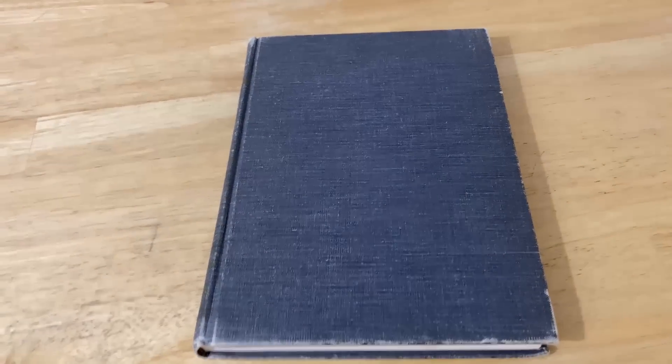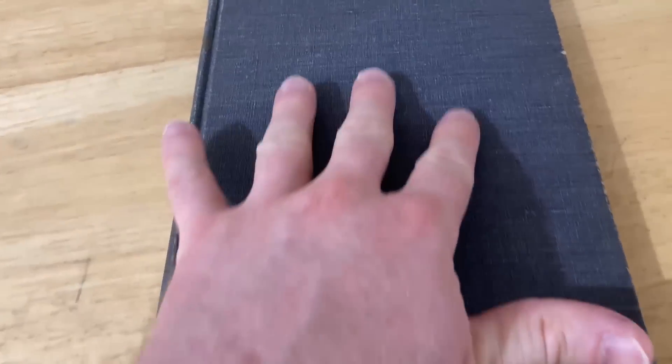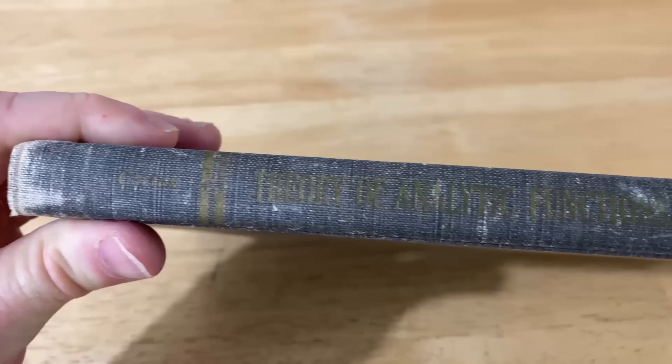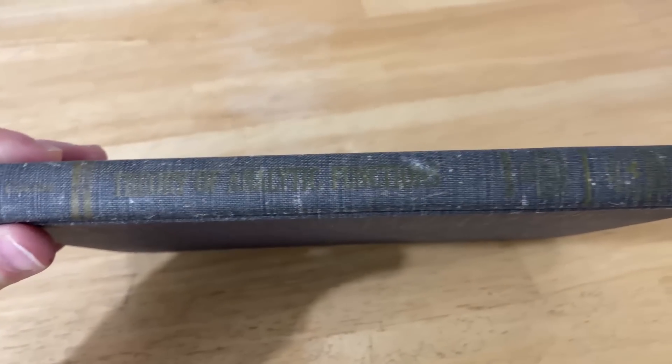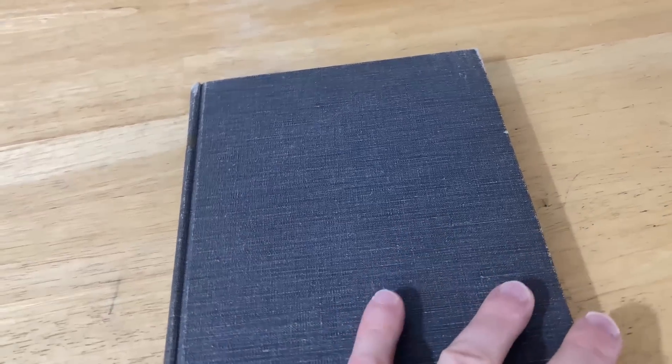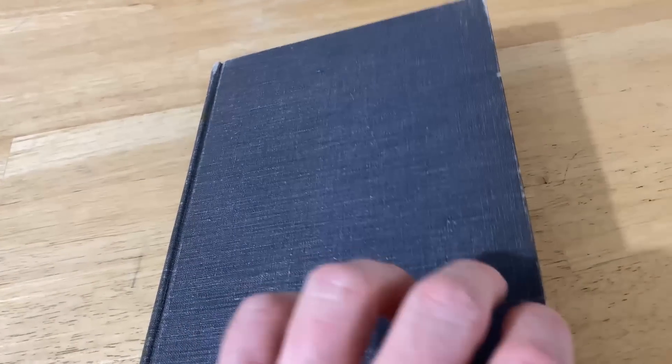And I have saved the most interesting book for last. Notice there's no writing on this book here. And you can't even make out what it says there perhaps. So let's go ahead and open it up so you can see this book. This book was written by a member of Bourbaki. Bourbaki was a group of elitist French mathematicians.